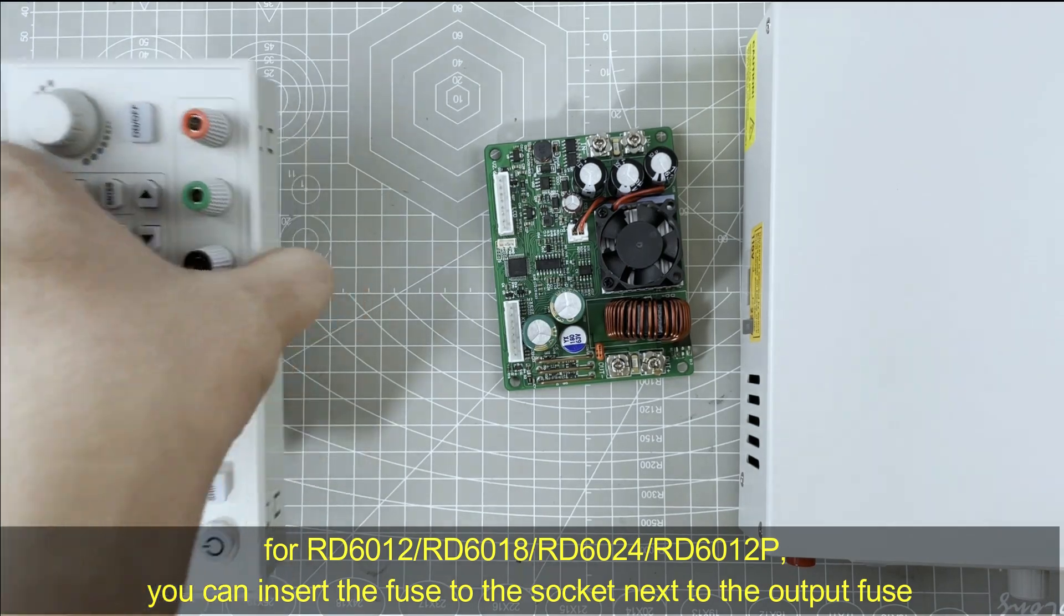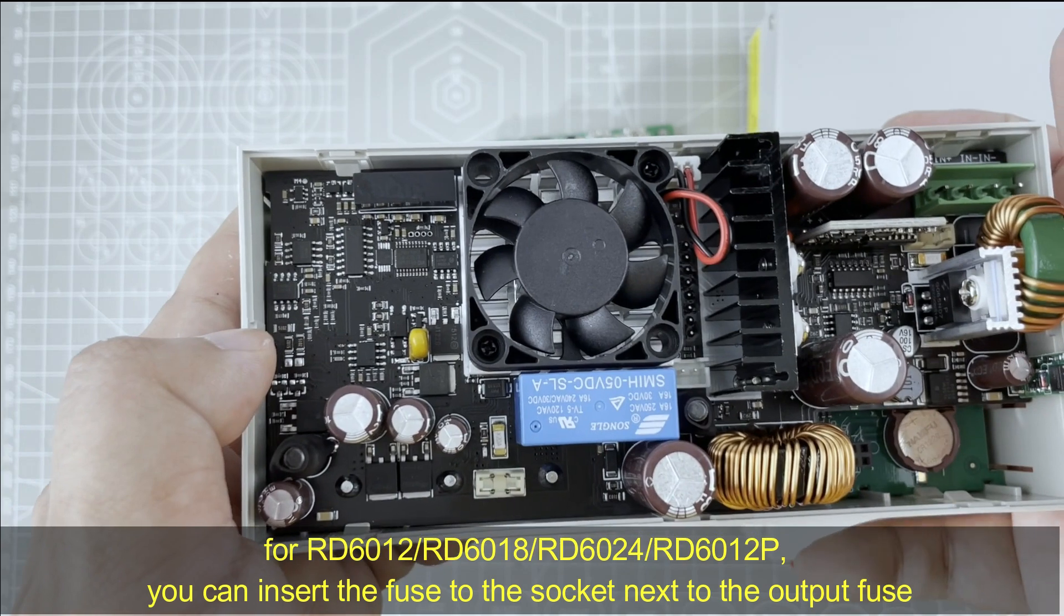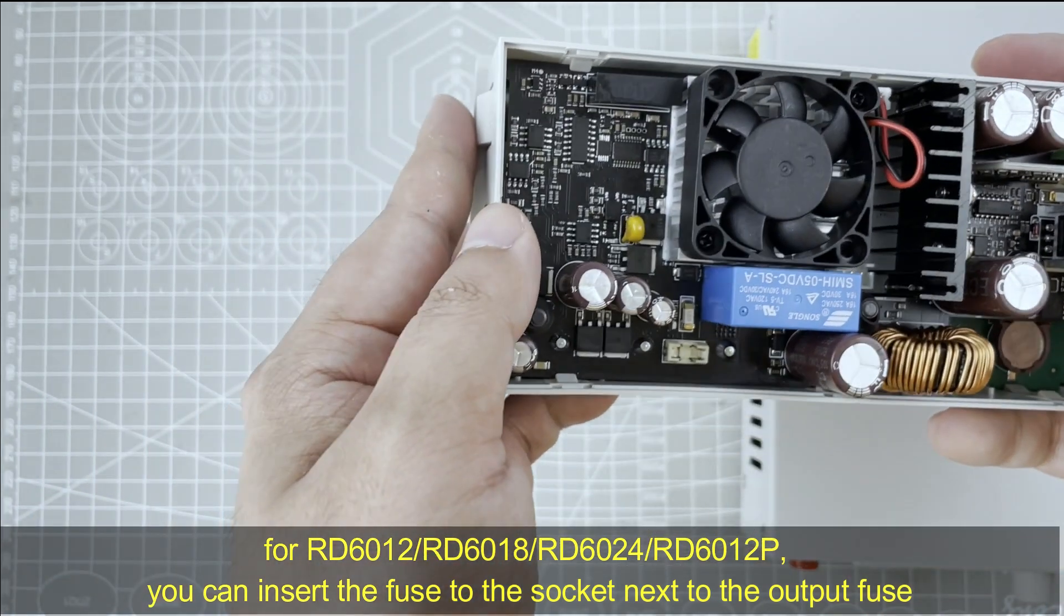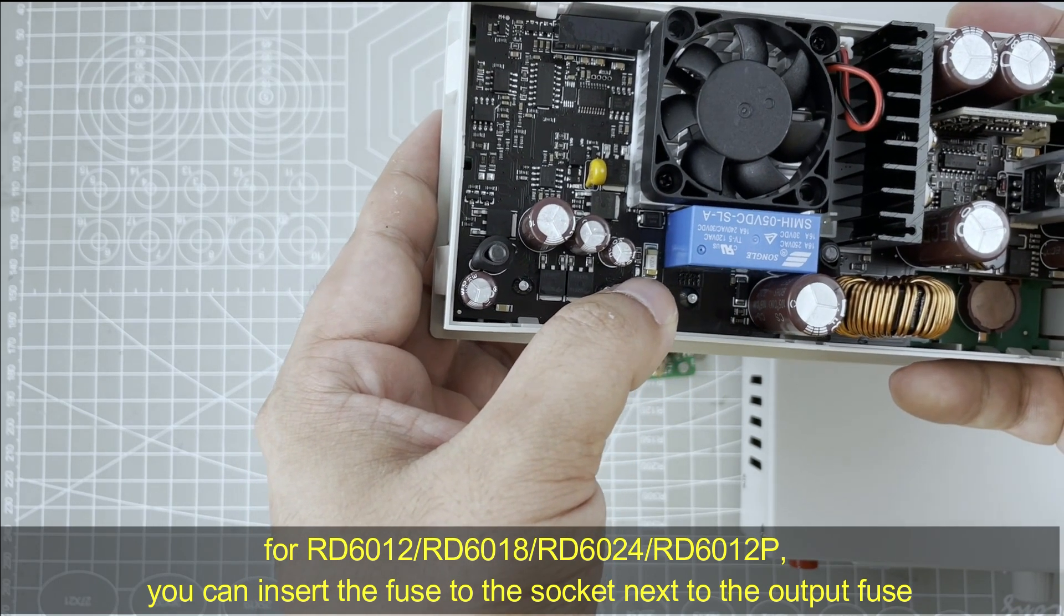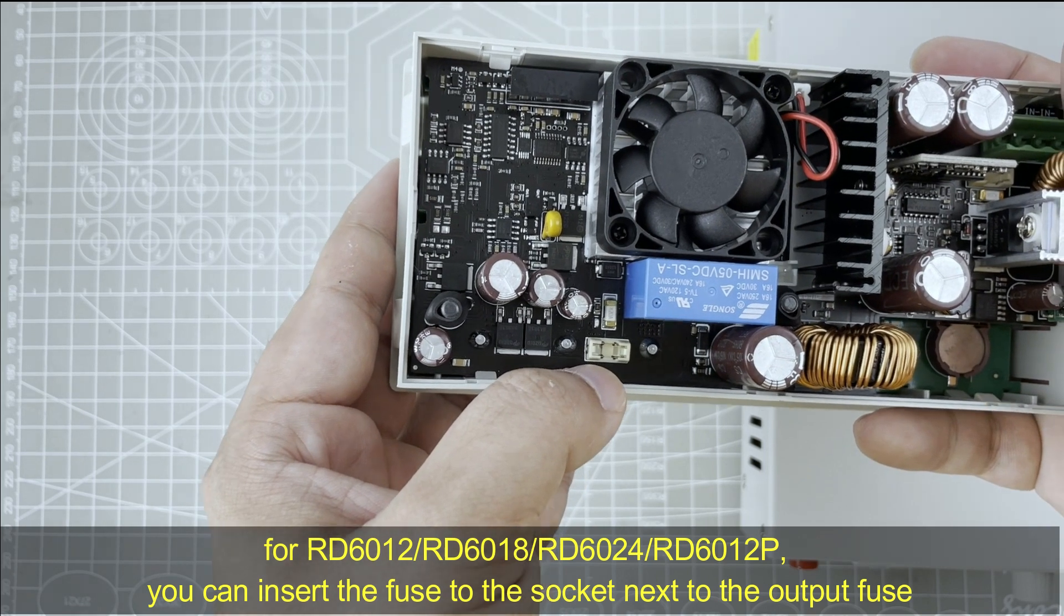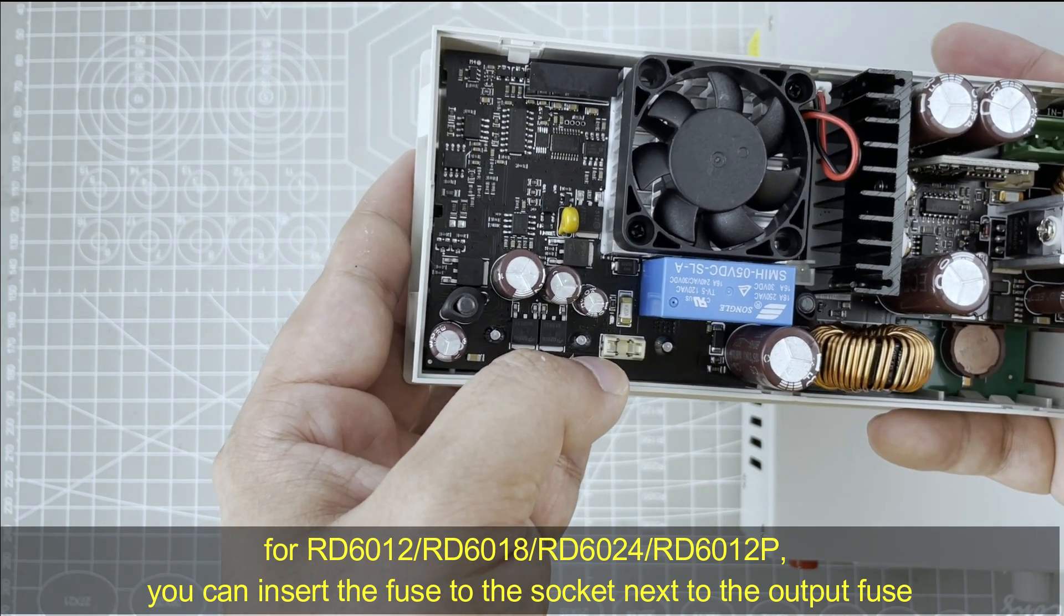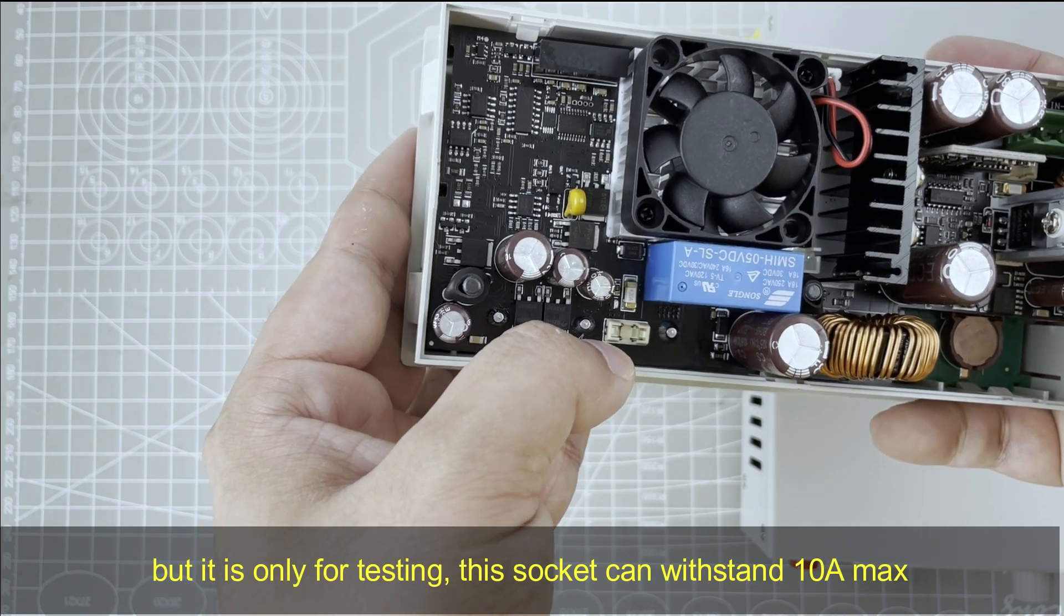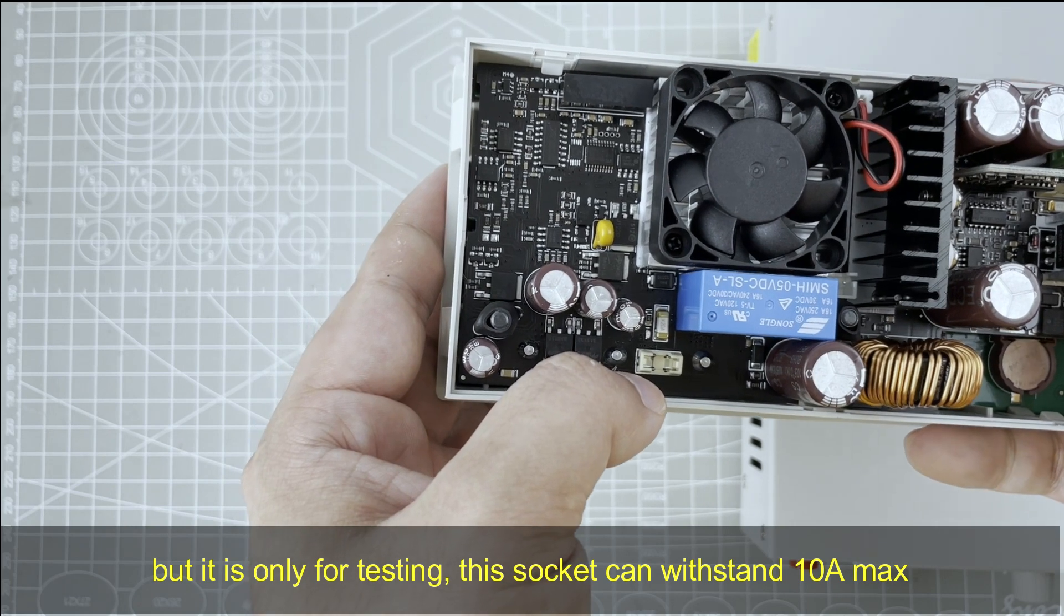But for other RD series power supply whose output fuse is over 10 ampere, you can check it here. This is the output fuse. This is the output fuse socket. You can insert the fuse into this socket for test. But the test can only be allowed to use current under 10 ampere.